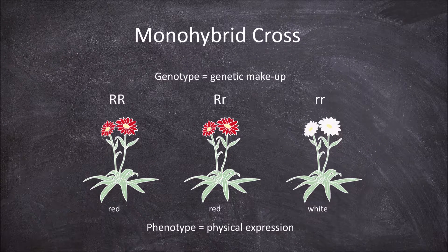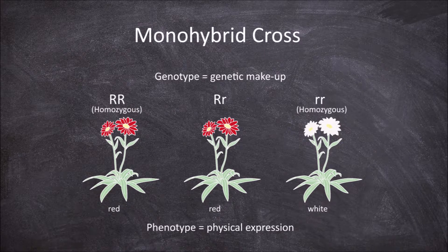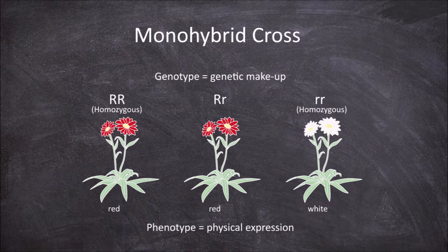Those that have the genotype big R big R and little r little r are considered homozygous as they have two of the same alleles. Those that have one big R and one little r are considered heterozygous as they have two alleles that are different.